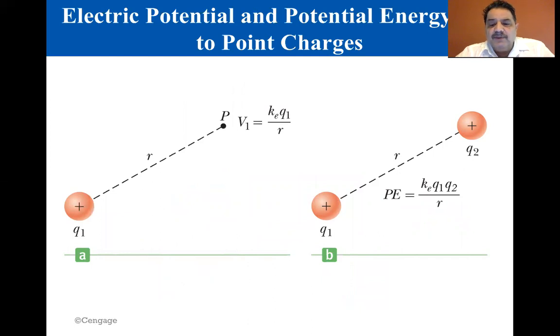Let's look at the relationship between electric potential and electric potential energy. If V1 is the electric potential due to charge q1 at the point P, as in the figure on the left, the work required to bring charge q2 from infinity to P without acceleration is q2 V1. By definition, this work equals the potential energy of the two-particle system when the particles are separated by a distance r, as shown in the figure on the right.